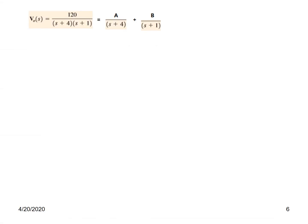We take help of the residue method. To find A, we multiply the function by the denominator of A, which is (S + 4), and set S + 4 = 0, i.e., S = −4. The (S + 4) terms cancel, leaving 120 divided by (S + 1). Putting S = −4, the denominator becomes −3, and 120 divided by −3 gives A = −40.